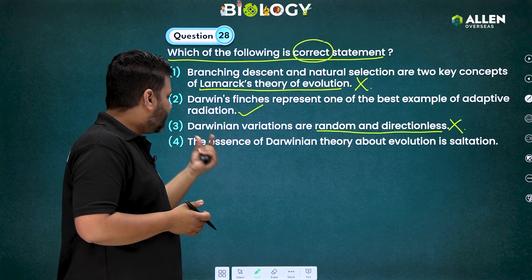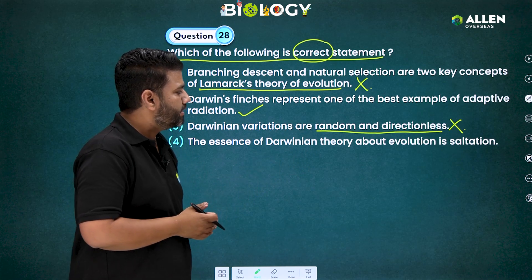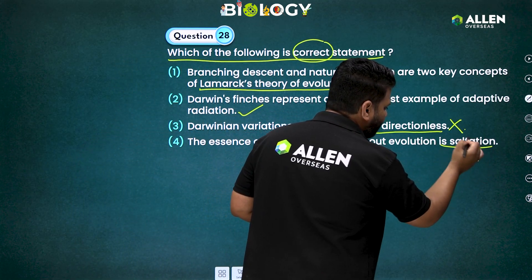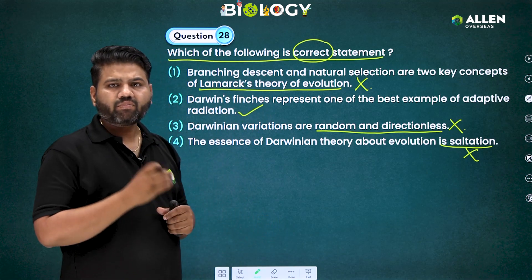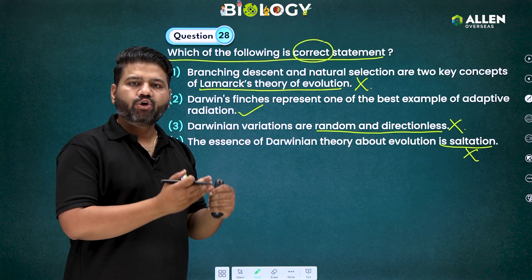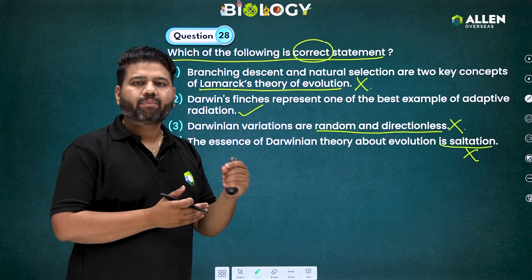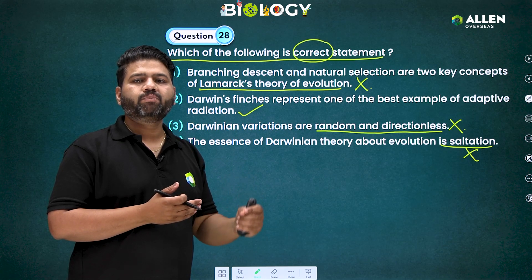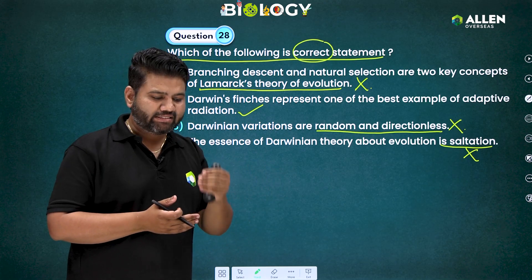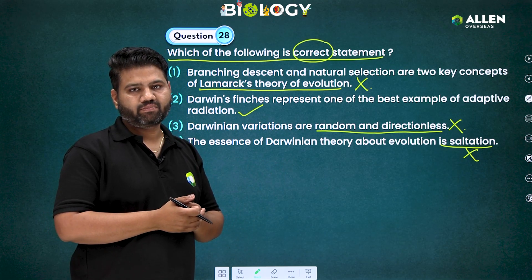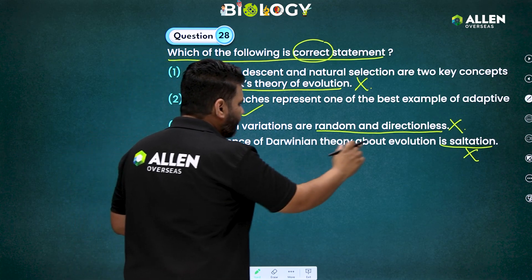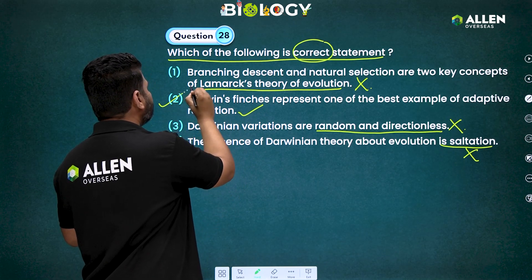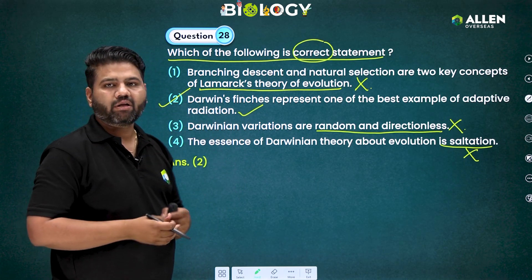The fourth statement says the essence of Darwinian theory about evolution is saltation — this is again incorrect, because saltation is associated with Hugo de Vries's theory of mutation, where single-step large mutations are responsible for saltation. Therefore the fourth statement is also incorrect. We need to identify the correct statement, which is the second one — Darwin's finches and adaptive radiation. Option number 2 is the correct answer.